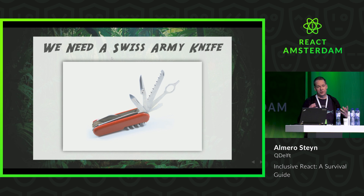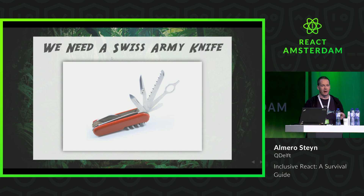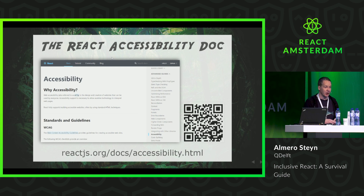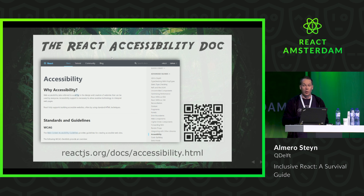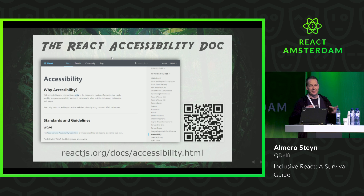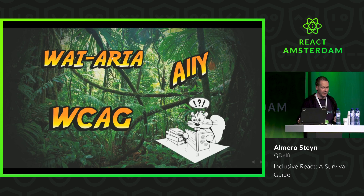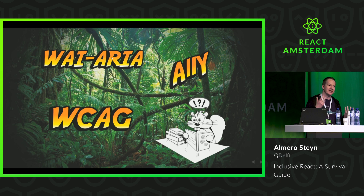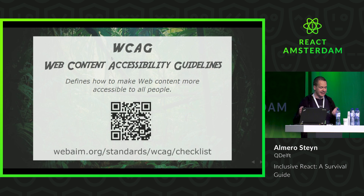These are some examples — now how can you go out there and find these in your own applications? For that you need a Swiss Army knife to cut through these issues, and that Swiss Army knife is the accessibility page in the React docs. The official docs have a page on accessibility that tells you why we do accessibility, what it is, and provides tons of good resources. This doc contains a lot of new terms — don't worry, just names for standards. For instance, WCAG stands for the Web Content Accessibility Guidelines.